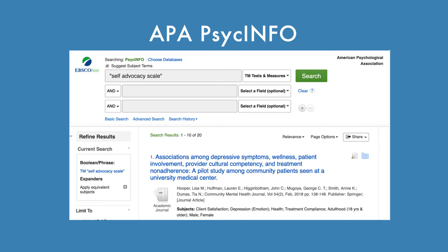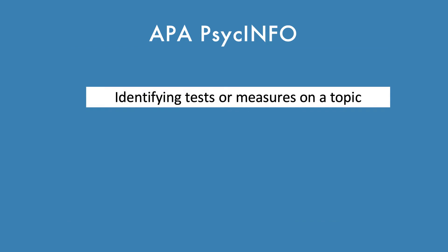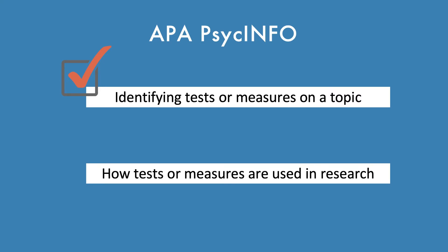In summary, PsychInfo's Tests and Measures field allows you to find articles where authors mention using a test or measure. This can be a powerful technique for identifying tests or measures, or seeing how tests or measures are used in research.